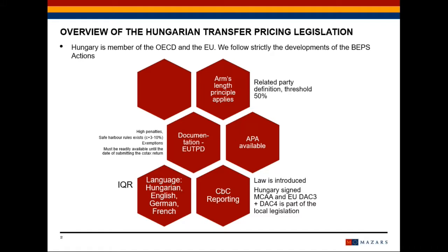APAs are available in Hungary — unilateral, bilateral, multilateral agreements are available — but based on our experience and based on the communication of the local tax authority, there are no finished decisions on bilateral and multilateral agreements. CBC reporting is introduced in Hungary. The law was voted in the beginning of May, so CBC reporting is mandatory in Hungary as well. Hungary has signed the multilateral competent authority agreement and there is also automatic exchange of information in connection with the CBC reporting and also the APAs and tax rulings.